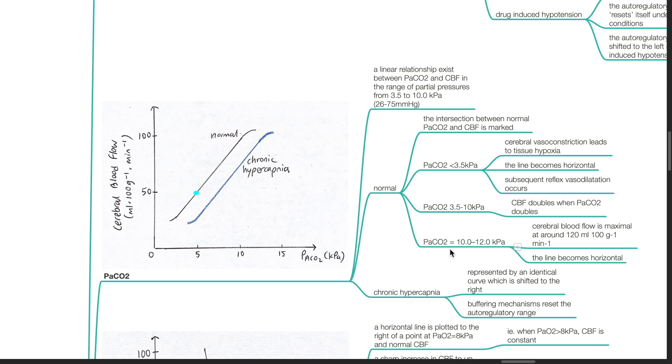When PaCO2 exceeds 10 kPa, cerebral blood flow is maximal at around 120 mL per 100 g per minute. The line becomes horizontal. In chronic hypercapnia, this situation is represented by an identical curve which is shifted to the right. Buffering mechanisms reset the autoregulatory range.